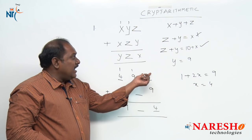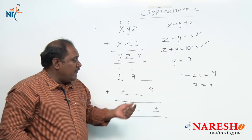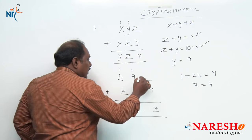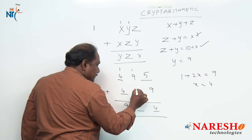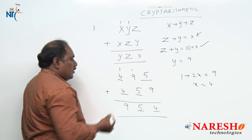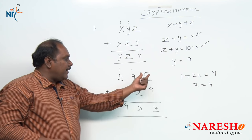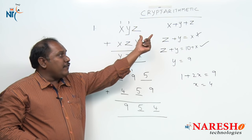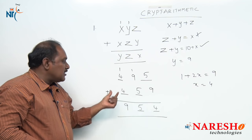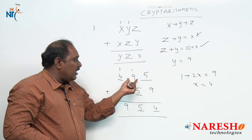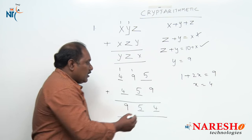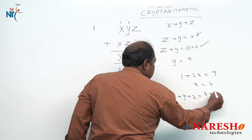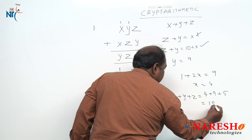With x equal to 4 and y equal to 9, we now solve for z. z plus 9 equals 4 with a carry of 1 — this is only possible when z is 5. We can verify: 495 plus 459 equals 954. The question asks for the value of x plus y plus z. The value of x is 4, y is 9, and z is 5. So x plus y plus z equals 4 plus 9 plus 5, which is 18.